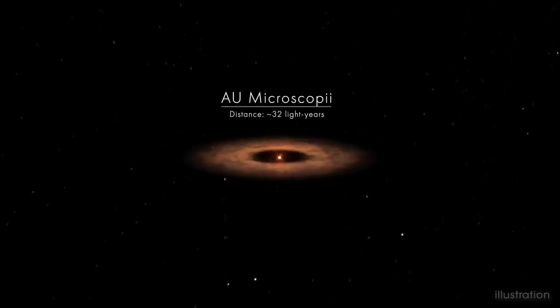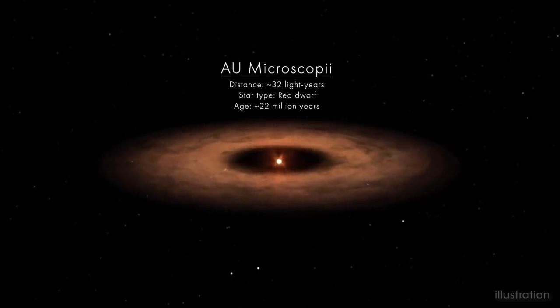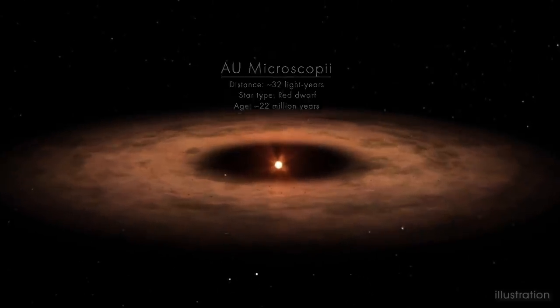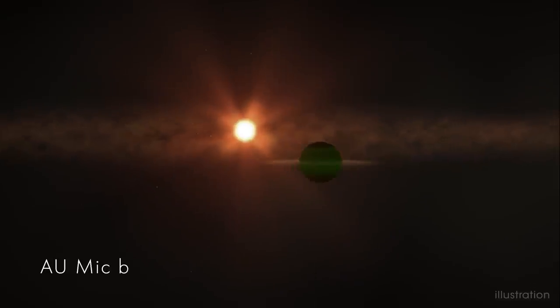AU Mic is a red dwarf star at least 150 times younger than our Sun. It's so young that a vast disk of dust and icy grains still surrounds it. The planet, AU Mic b, orbits very close to its star within a central zone where the disk material is cleared away.